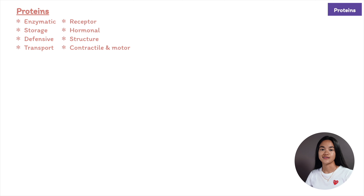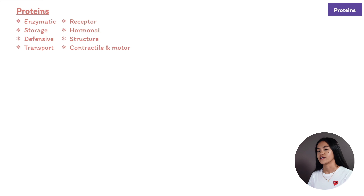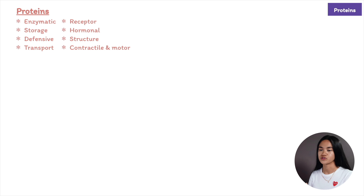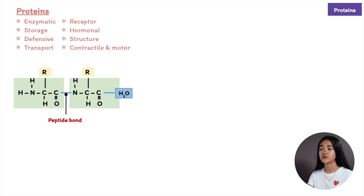One of the most important types of proteins are enzymes, which regulate metabolism by acting as catalysts — chemical agents that speed up specific chemical reactions without being consumed in the reaction. Proteins are all made from the same set of 20 amino acids linked in unbranched polymers. Proteins are polymers of amino acids, and the bond between amino acids is called a peptide bond — they are joined by a dehydration reaction in which a water molecule is removed.